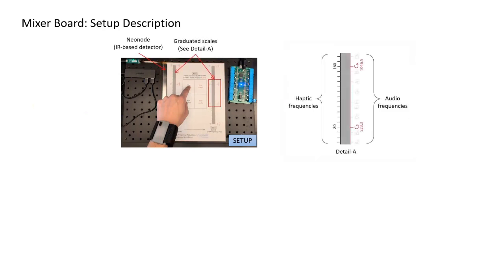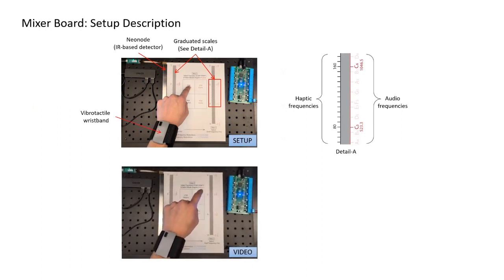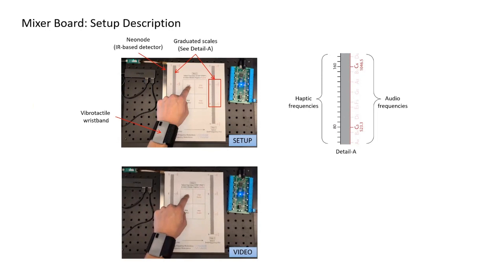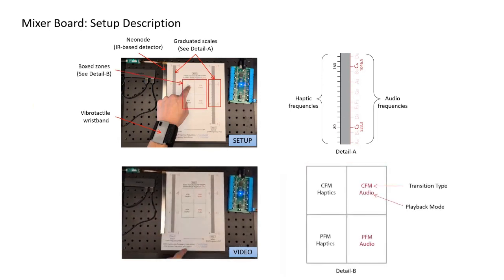The user will wear a vibrotactile wristband to feel the haptic feedback. They can select the start frequency, end frequency, and the transition type and playback mode are selected by placing the finger in one of the boxed zones.